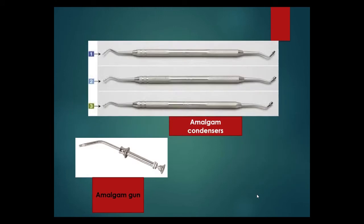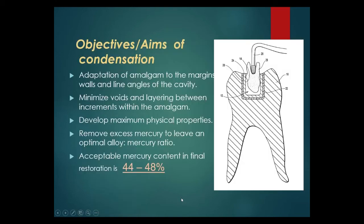Objectives of condensation: adaptation of amalgam to the margins, walls, and line angles of the cavity; minimizing voids and layering between increments within the amalgam; developing maximum physical properties; and removing excess mercury to leave an optimal alloy-mercury ratio. Acceptable mercury content in the final restoration is 44–48%.